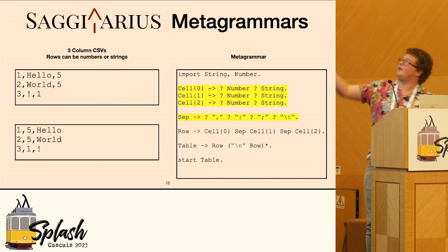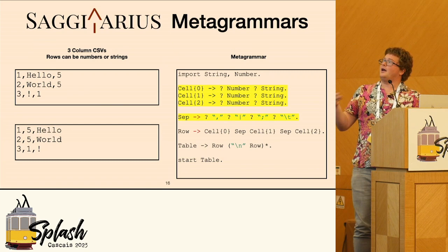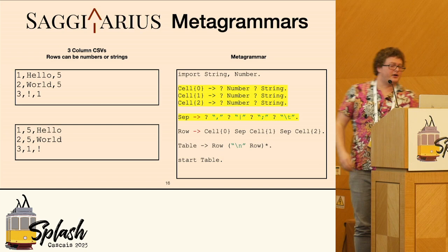So now I say that cell zero can go to number or string, cell one can do the same, and then I'm also going to do a similar thing for separators to say, yeah, maybe we can have any of these four separators.